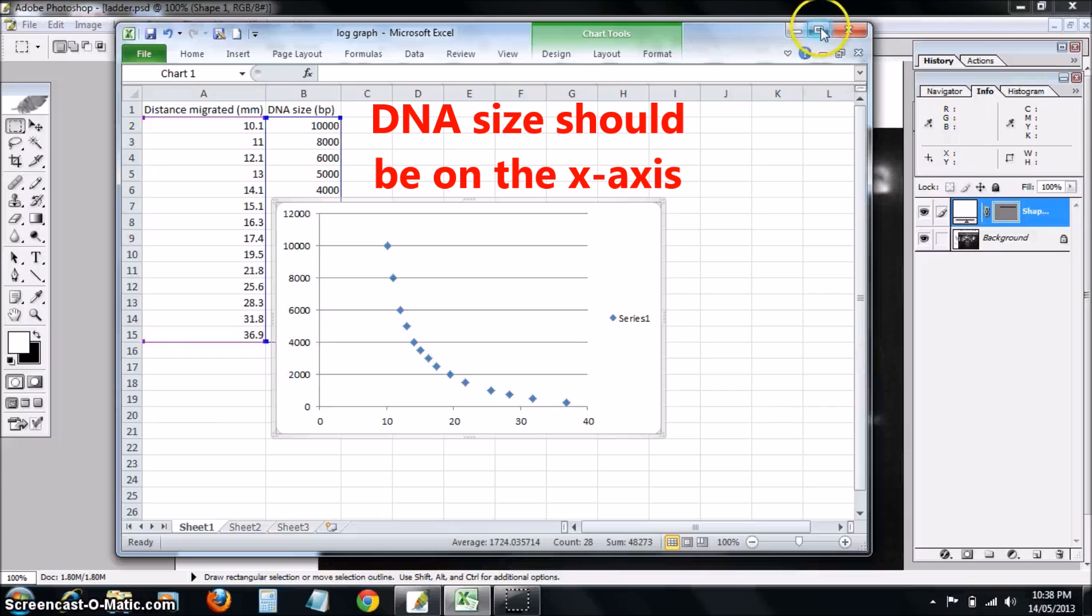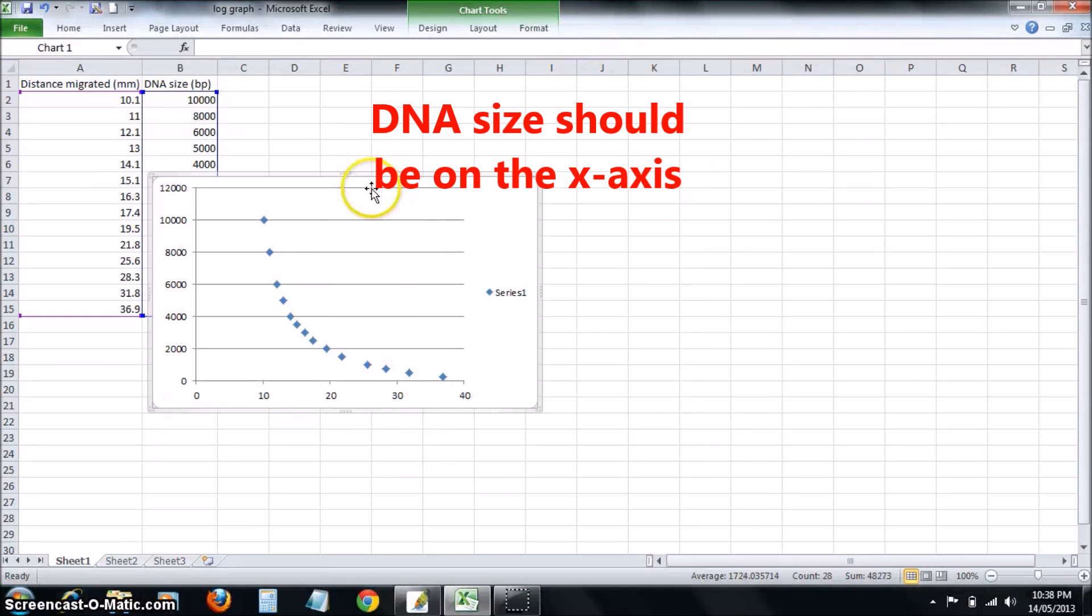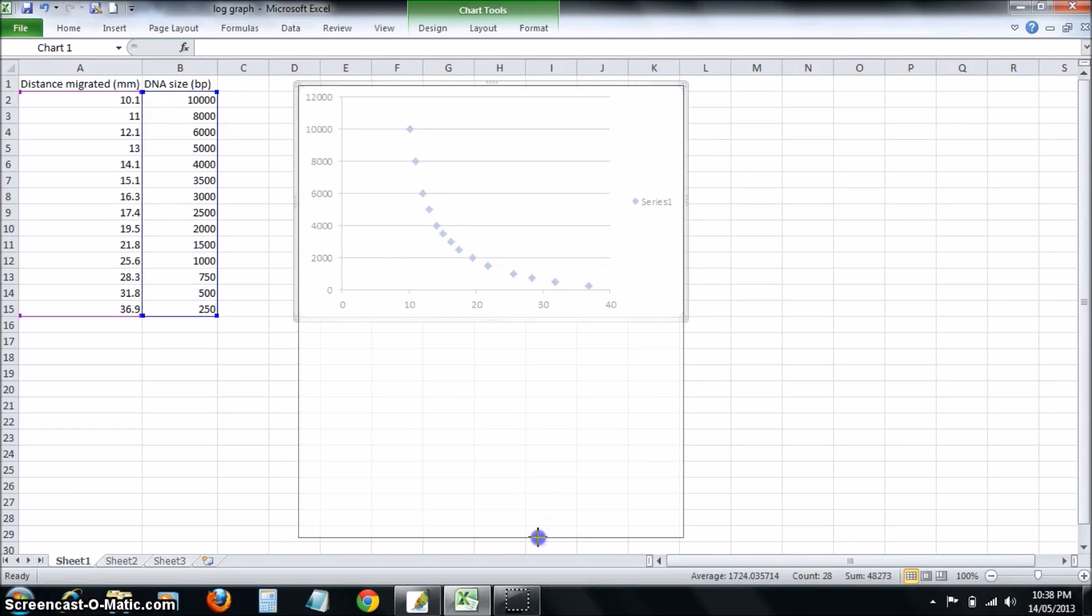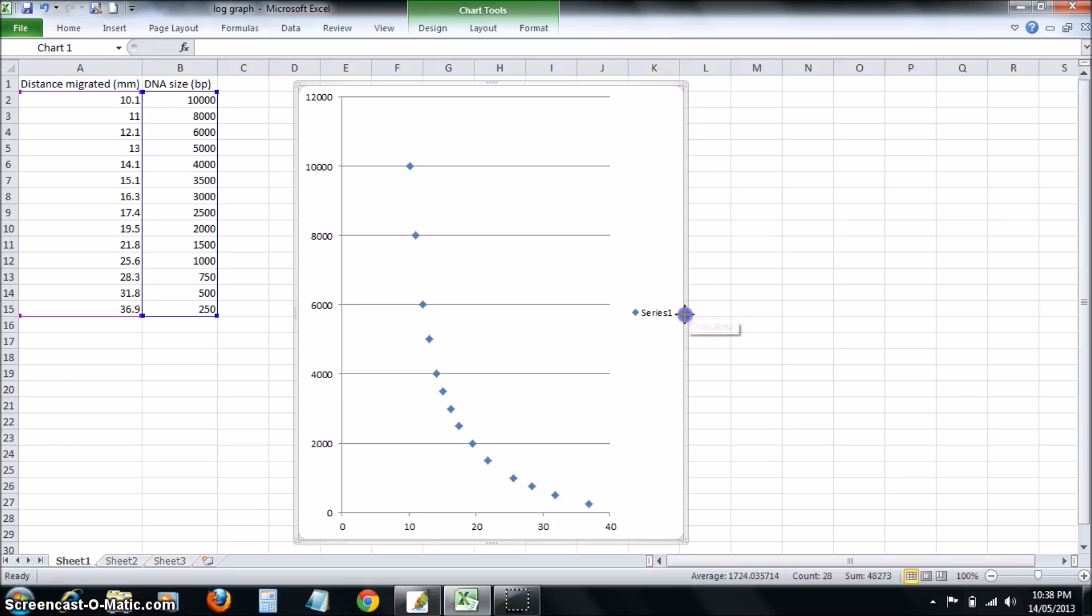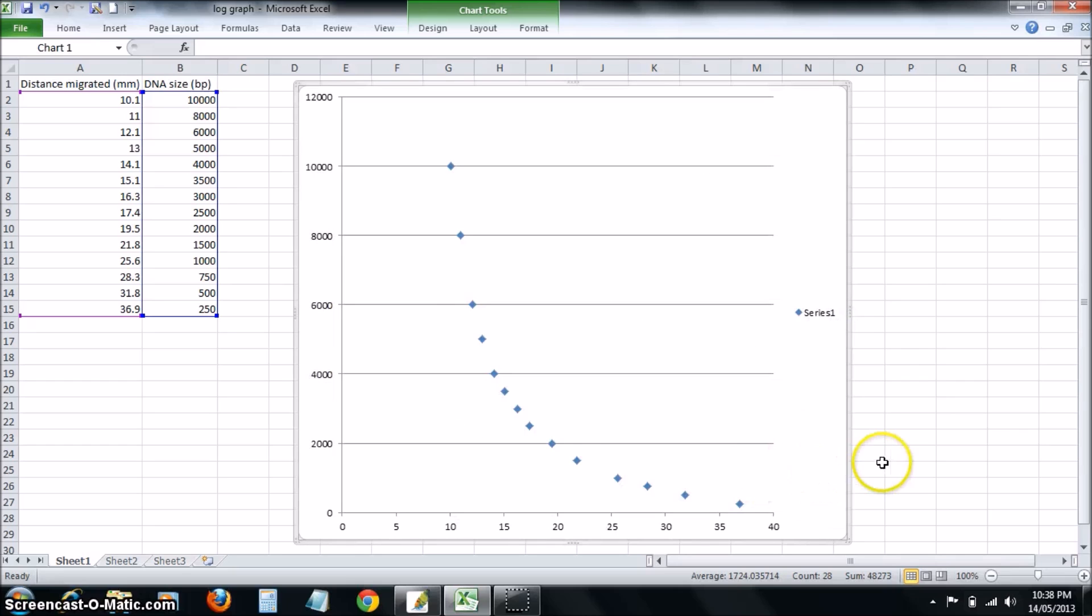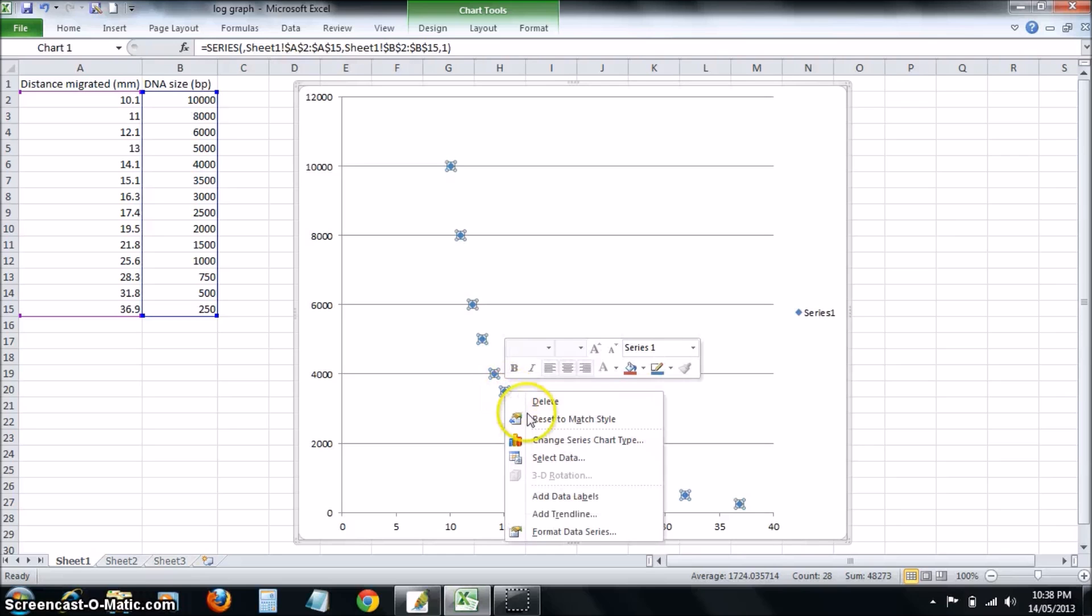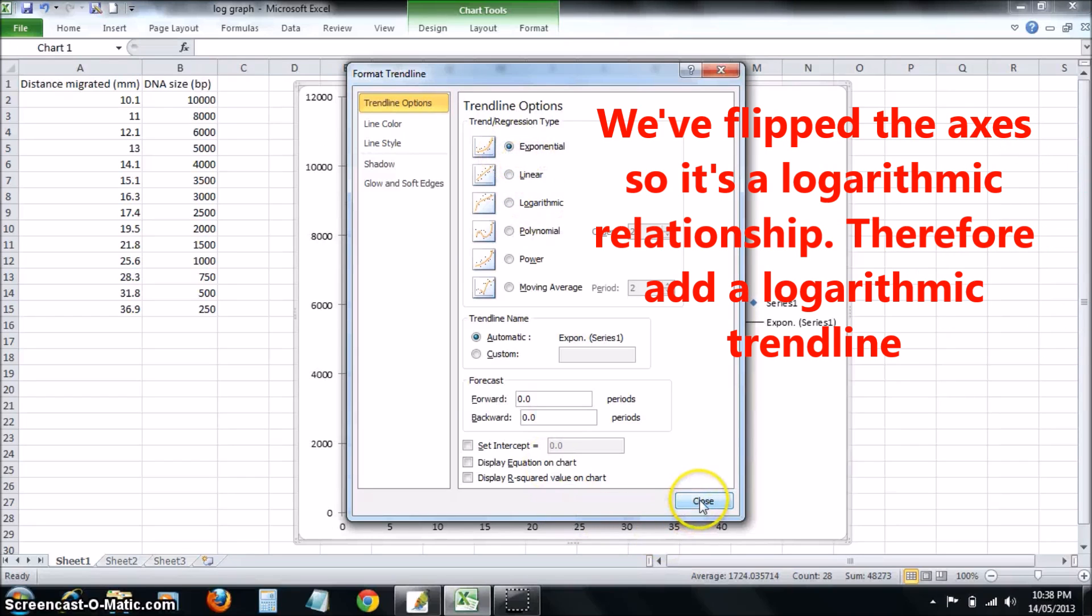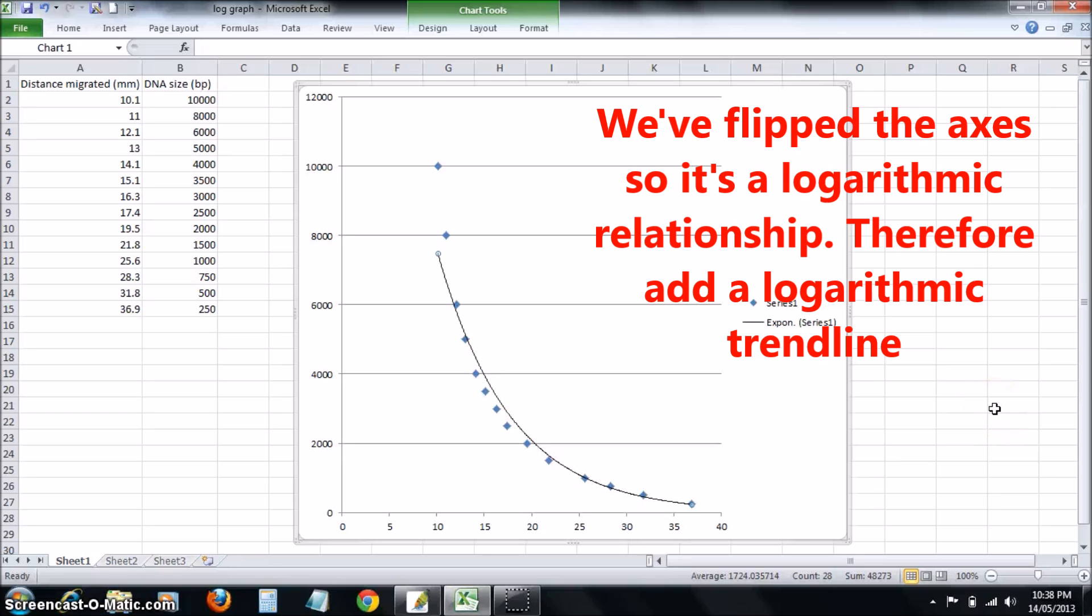What you get is this curved relationship. It's an exponential relationship. Just make this nice and big. It's a nice curve. What you should do is add a trend line. It is an exponential relationship, so add an exponential trend line. You can see a nice curve there.